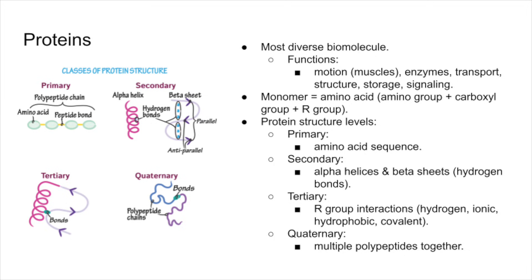Proteins are the most diverse biological molecules, with functions ranging from movement, like muscle fibers, to transport, structure, signaling, storage, and even catalyzing reactions through enzymes. Their monomers are amino acids, which all have an amino group, a carboxyl group, and a variable sidechain called the R group. The R group determines the chemical properties of each amino acid.